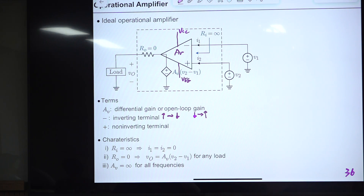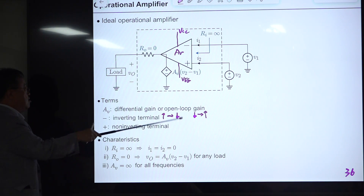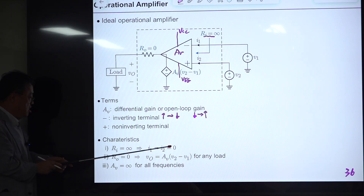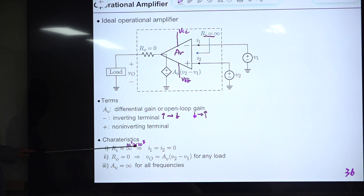Because the op-amp gain is very large and output is finite, the difference between inverting and non-inverting terminal voltages V+ - V- must be extremely small — essentially zero. This is called virtual short: the two input terminals have the same potential but no current flows between them.